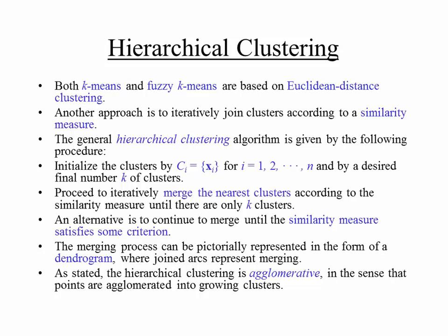K-means and fuzzy K-means are based on Euclidean distance clustering — points are placed into a cluster based on Euclidean distance from the centroid. Another approach is hierarchical clustering, which iteratively joins clusters according to some similarity measure. If two clusters are close enough, you combine them. The hierarchical clustering algorithm is given by a specific procedure.